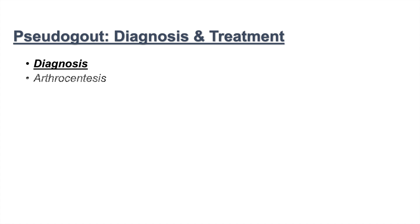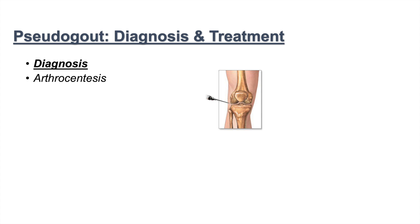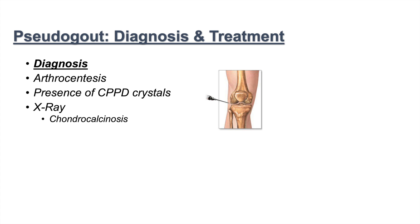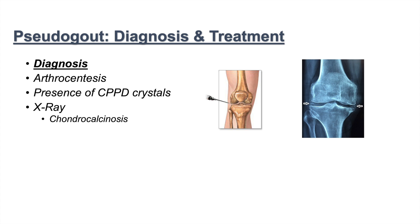Diagnosis of pseudogout involves arthrocentesis, or aspiration of the joint. We take a needle and aspirate the contents of the joint, looking for the presence of calcium pyrophosphate dihydrate (CPPD) crystals. We can also perform an x-ray to look for chondrocalcinosis, which is calcification of the hyaline cartilage. Once we have seen the presence of these CPPD crystals, we can confirm a diagnosis of pseudogout.